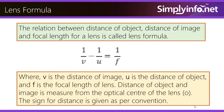Distance of object and image is measured from the optical centre of the lens O. The sign for distance is given as per convention.